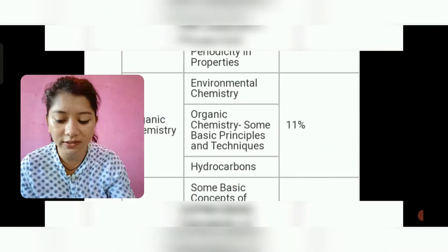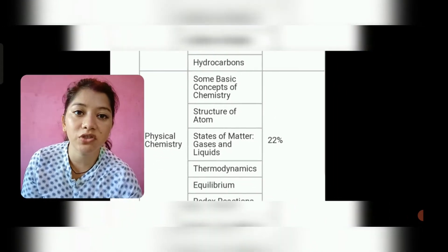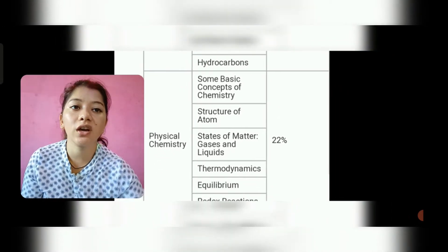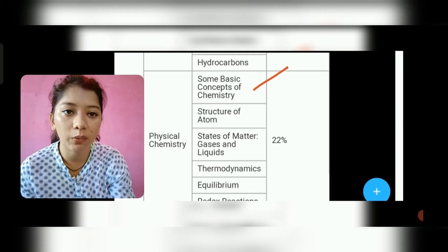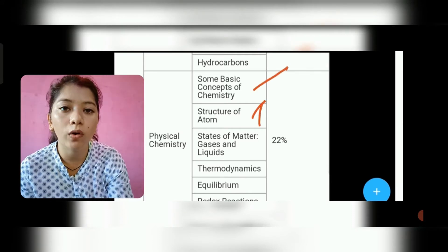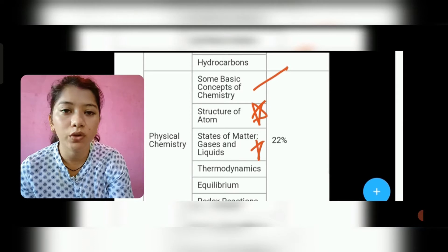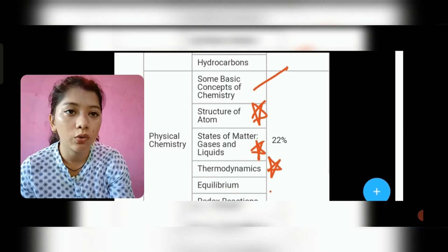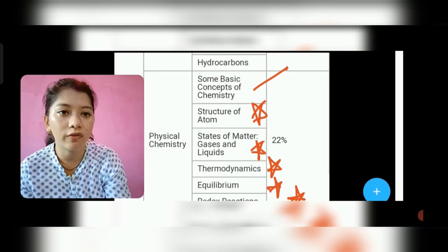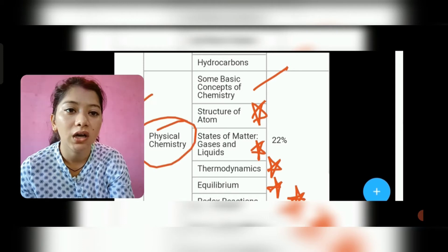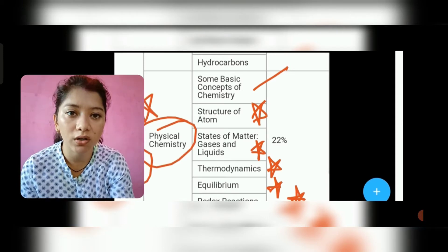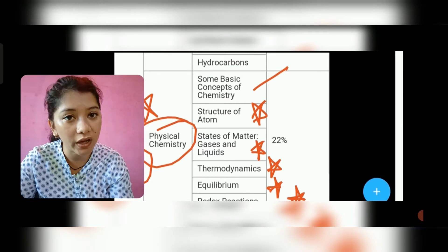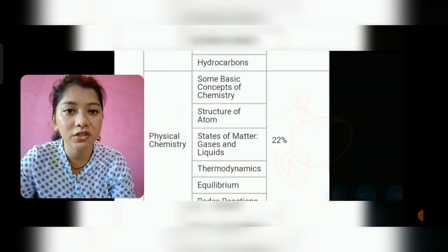After that, we will do the third, that is physical chemistry. If you are watching, this chapter was 22%. We have covered the chemistry and the physical chemistry which is overall your questions. In this you will see basic concepts, structure of atoms, state of matter, thermodynamics, equilibrium and redox reaction. All of these chapters are important. Everyone is coming from questions and they are not coming from many times.